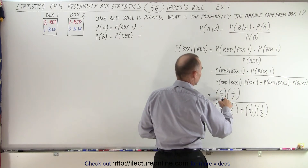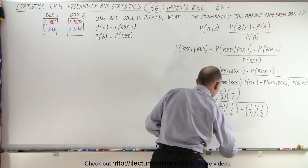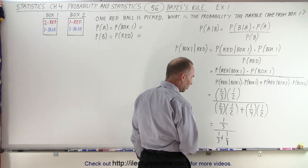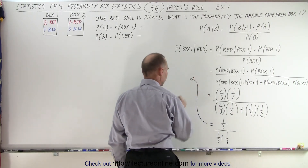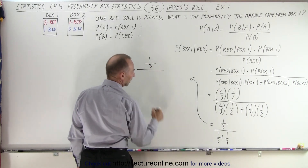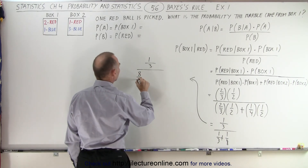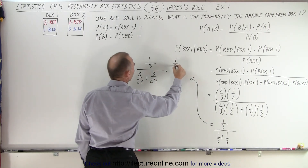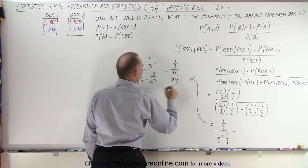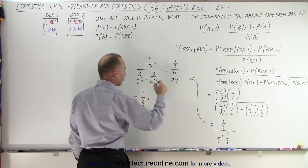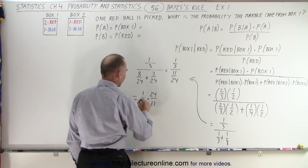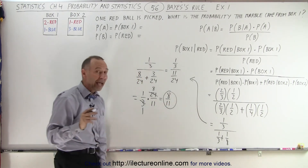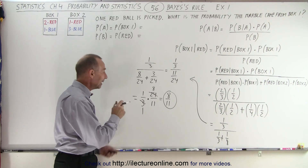This gives us two-thirds times one-half — the twos cancel, giving us one-third in the numerator — divided by one-third plus one-eighth. We need to combine the denominator using a common denominator of 24: that's 8 over 24 plus 3 over 24, which equals 11 over 24. So we have one-third divided by 11 over 24, which equals one-third times 24 over 11. The 3 and 24 cancel to give 8, so the result is 8 over 11.